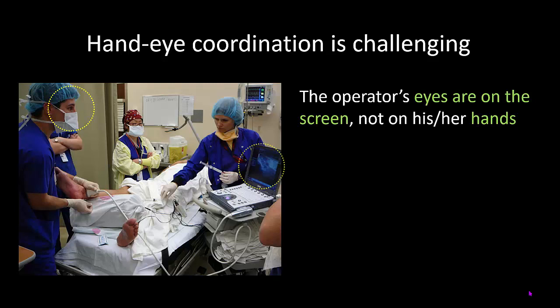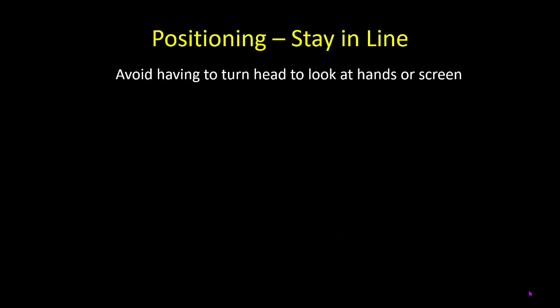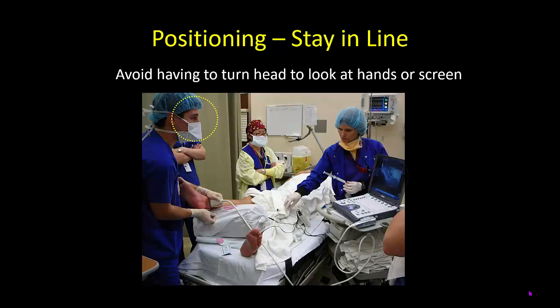The next thing I want to discuss is positioning. Hand-eye coordination in ultrasound guided regional anesthesia is challenging, because we are looking away at a screen and not down at our hands. We are also manipulating the probe and needle in three dimensions based on information from a two-dimensional image. This emphasizes the importance of constructing a three-dimensional model in your mind during the scanning phase. It's important to arrange the machine, the patient, and where we stand so that everything is in a straight line, and we don't have to turn our head or body to look at the screen or our hands.